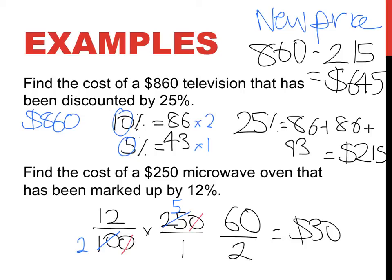So $30 is 12% of $250 and so if it's $30, my markup's going to be new price. My markup's going to be $250 plus $30 and that's going to equal $280.